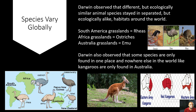Here's another example — the rhea stays in South America, the ostrich resides in Africa, and the emu resides in Australia. If you notice, all three of these species are separated by vast amounts of water, but they look similar and stay in ecologically alike habitats. Darwin also observed that some species are only found in one place and nowhere else in the world, like kangaroos are only found in Australia. The eastern gray kangaroo, the red kangaroo, and the western gray kangaroo all reside only in Australia.